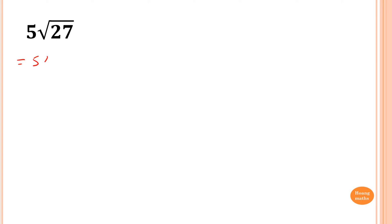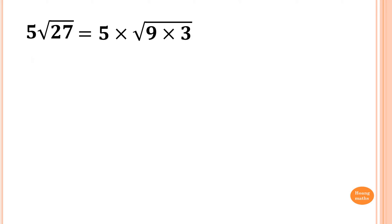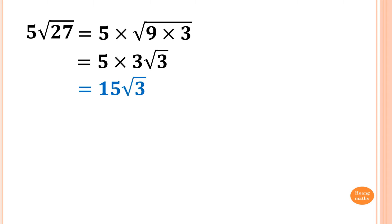This one here is slightly different because you've got a 5 in front, but technically it's the same thing — it's just like 5 times √27. So 27 is 9 times 3, and that's all. So 5 × √(9 × 3). You know that square root 9 is 3, so your answer is 5 times 3√3. And 5 times 3 is 15, so the answer is 15√3.